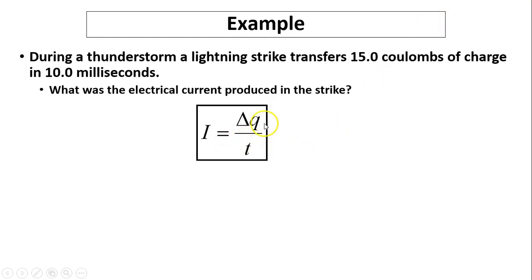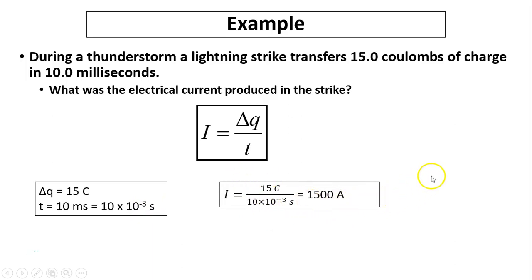What? Current equals charge over time. Charge is 15 coulombs, time is 10 million milliseconds—we have to change that into seconds. A milli is 10 to the negative 3, so plug everything in: you have 1,500 amps. That's why the lightning strike is so dangerous—the current is huge.